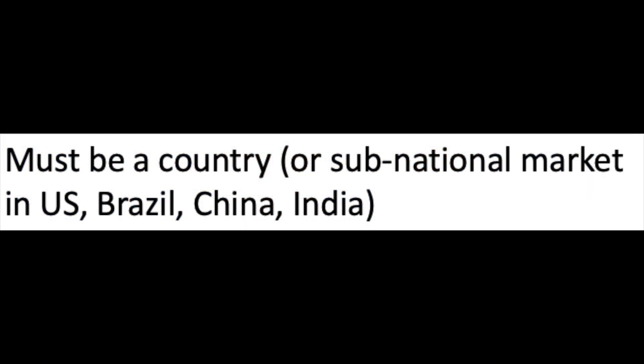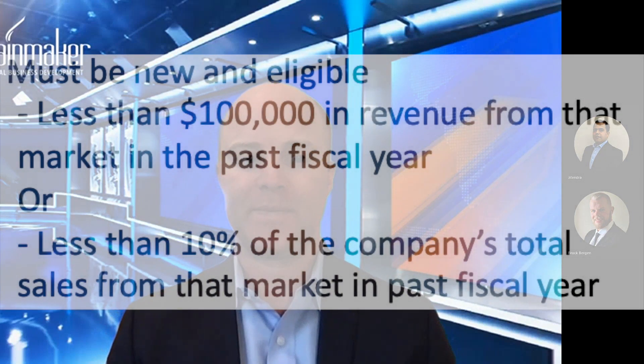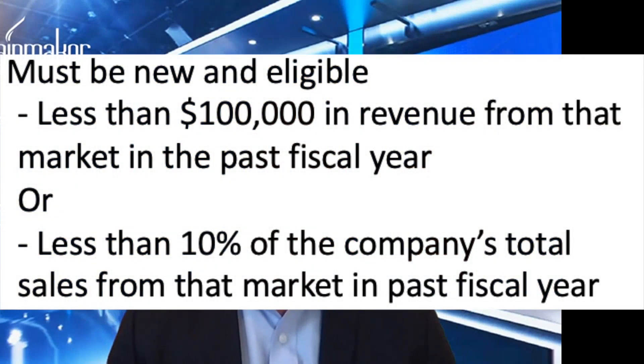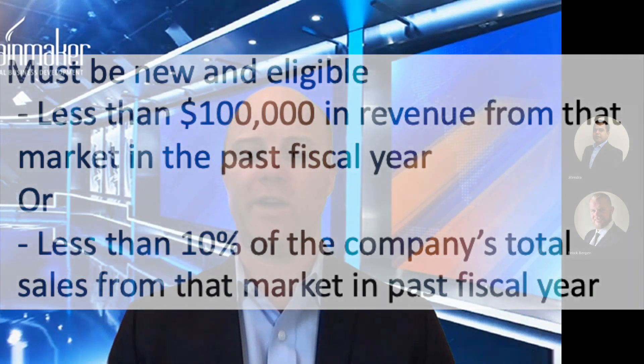In terms of eligible target markets, the CAN export SME program defines a target market as a country or a sub-national market of either the United States, Brazil, China, or India — meaning for those four countries they break up the country into smaller sub-regions. For a market to be eligible, you cannot have had more than 10% of your total revenue from the previous fiscal year come from that particular market. However, if your revenue from that market is under $100,000, it still qualifies even if it exceeds 10%. Every CAN export project allows a maximum of up to five target markets per project.